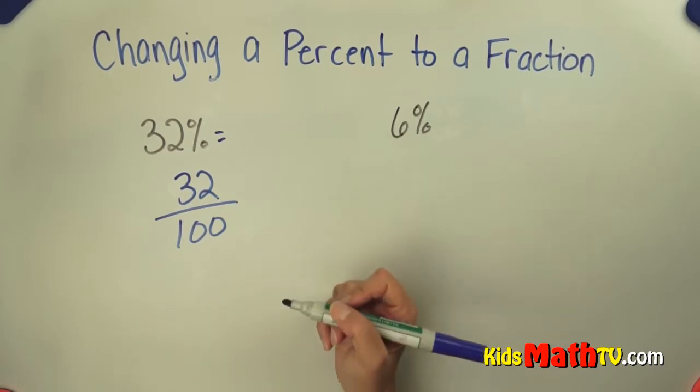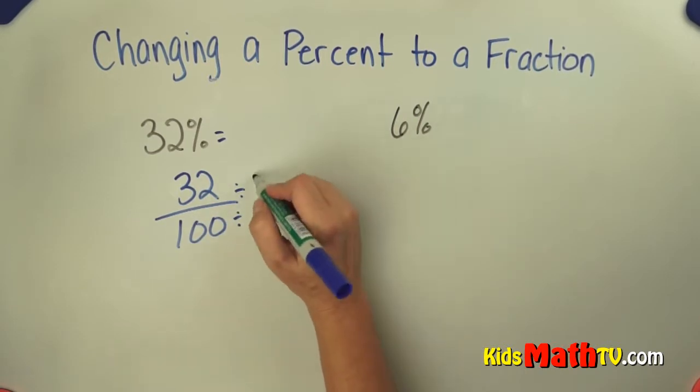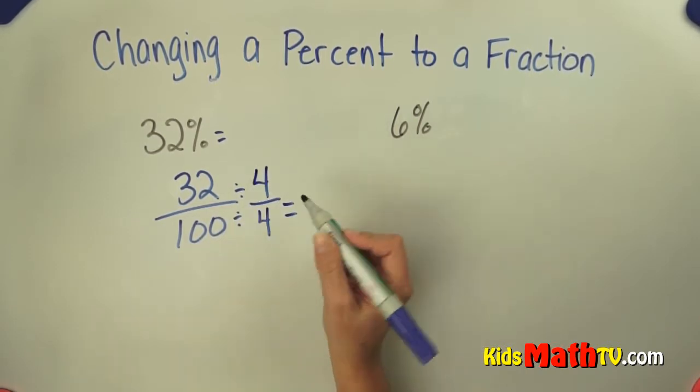We can reduce that or simplify it. Let's see what number will divide both 32 and 100. Well, 4 will. So I'm going to divide by 4 over 4.